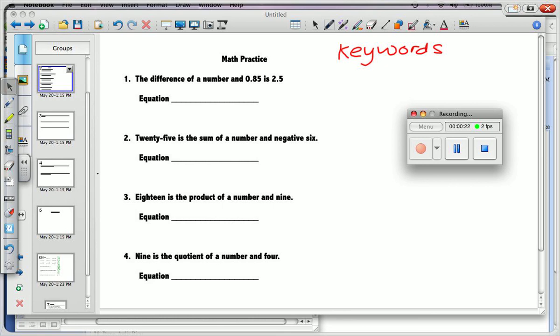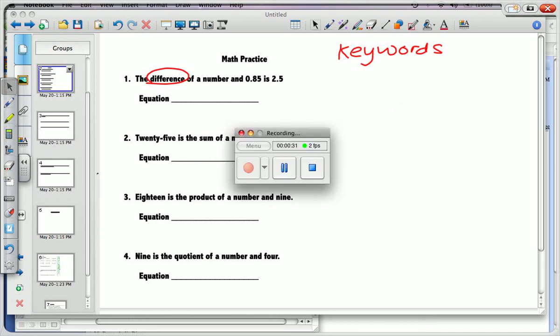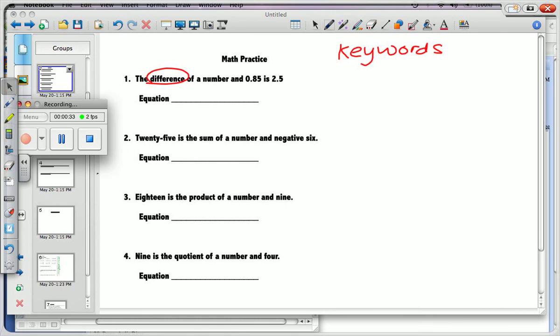For example, number one, difference. Difference is the answer to a subtraction problem. So my equation's going to have a subtraction in it. So number one, there's some subtraction involved. And the answer to a subtraction problem is known as a difference.